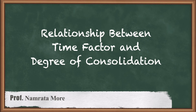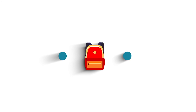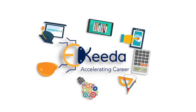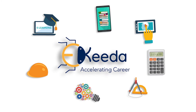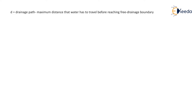Hello everyone. In this video we are going to discuss the relationship between time factor and degree of consolidation. In Terzaghi's theory of consolidation, the following three factors are considered important. The first factor is drainage path, denoted as d — it is the maximum distance that water has to travel before reaching a free drainage boundary. We have already discussed this in our previous video.